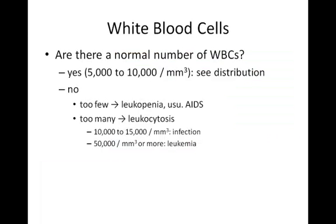Now let's turn to lab values which indicate problems with white blood cells. Remember that we studied the complete blood count, or CBC, which is a scattergram of cell characteristics. Different cell types end up in different places on the scattergram, and the computer analyzes these for you and tells you whether the values deviate from normal. Normally, a patient should have between 5,000 and 10,000 white blood cells, or leukocytes, per cubic millimeter. If it's a bit higher, that indicates the body is fighting infection. If it's a lot higher, that's leukemia.